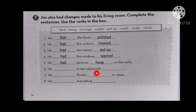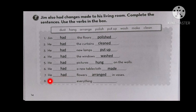Number six: he had a new tablecloth made. Number seven: he had flowers arranged in vases. Tablecloth means غطاء الطاولة (a table cover). Number eight, finally: he had everything dusted — meaning the dust was wiped from everything in the living room. James didn't do it by himself — someone did it for him.